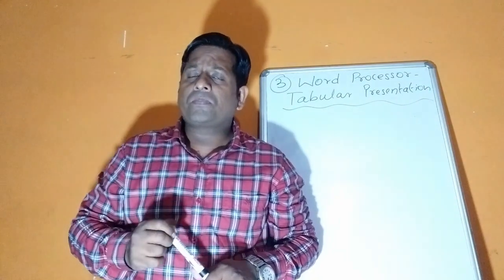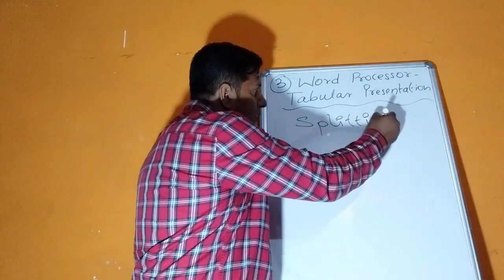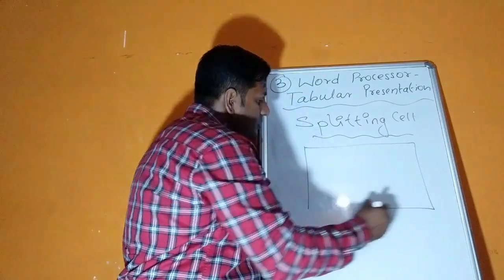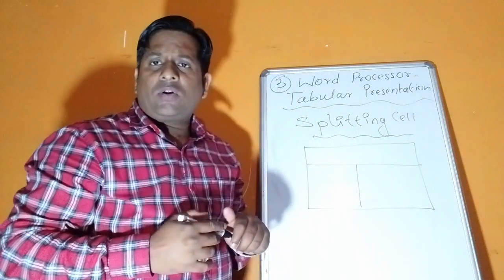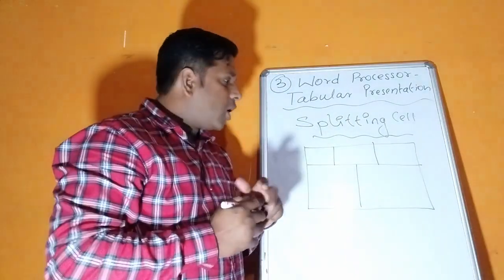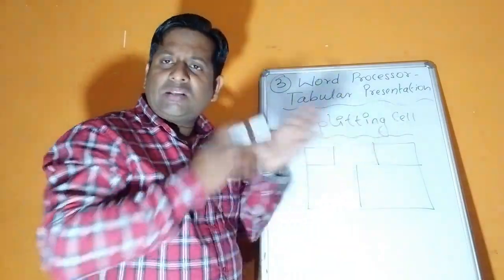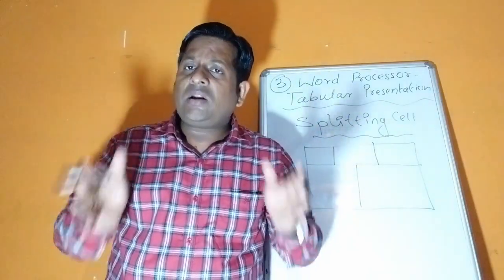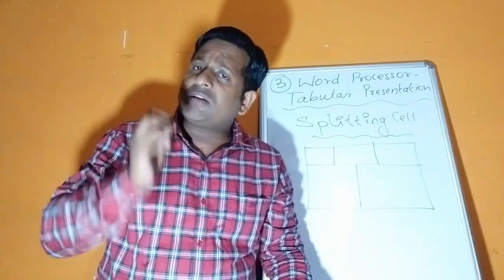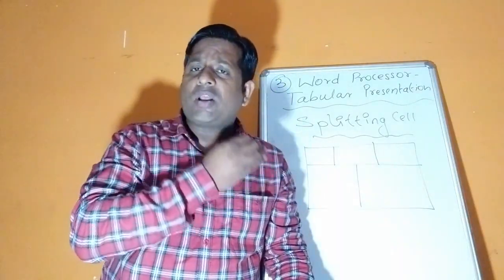Now sometimes we need to split the cell also. This is known as splitting cell. What does splitting cell mean? Like this our table is there, and now this part we need to make into multiple cells — say three columns here. Splitting cell means a single cell is divided into multiple cells. Splitting cell also has a benefit and it is used in our tabular representations.